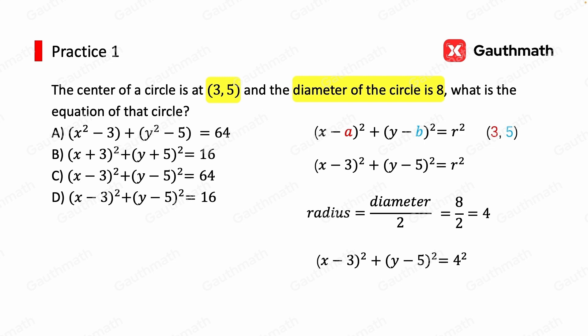So now our equation is completed. x minus 3 squared plus y minus 5 squared equals 4 squared. And 4 squared can be written as 16. So the answer is D.